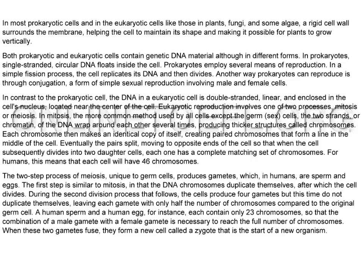The two-step process of meiosis, unique to germ cells, produces gametes, which in humans are sperm and eggs. The first step is similar to mitosis, in that the DNA chromosomes duplicate themselves, after which the cell divides. During the second division process that follows, the cells produce four gametes, but this time do not duplicate themselves, leaving each gamete with only half the number of chromosomes compared to the original germ cell. A human sperm and a human egg, for instance, each contain only 23 chromosomes, so that the combination of a male gamete with a female gamete is necessary to reach the full number of chromosomes. When these two gametes fuse, they form a new cell, called a zygote, that is the start of a new organism.